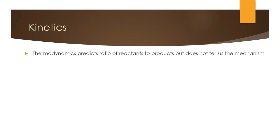Thermodynamics informs us if a reaction will occur given enough time and also the relative proportions between reactants and products. However, it tells us nothing about how likely a chemical reaction is to happen or how the reaction and products actually come together.